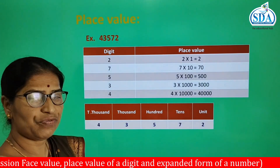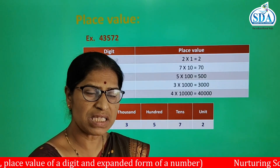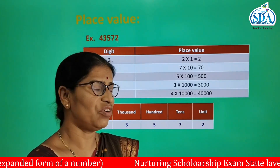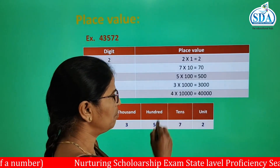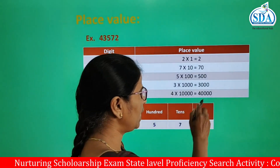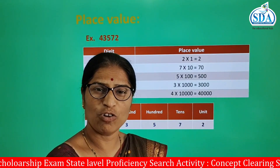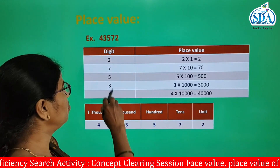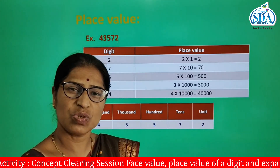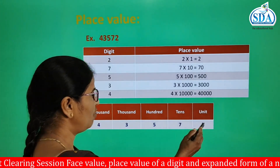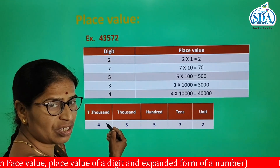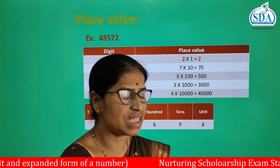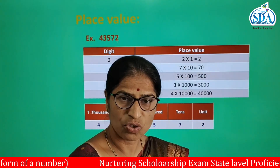For the place value of digit 4: digit 4 is at the ten-thousands place. Therefore we multiply 4 by 10,000 and we get the place value of 4, that is 40,000. So our number 43,572 consists of 5 digits, whose places are mentioned here, and from their places we can find the place value of each digit in this way.